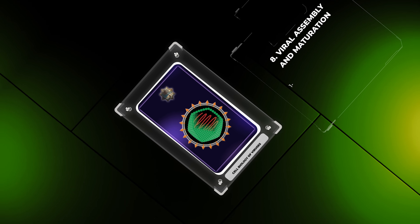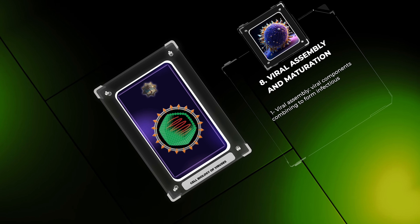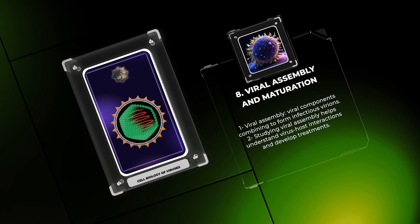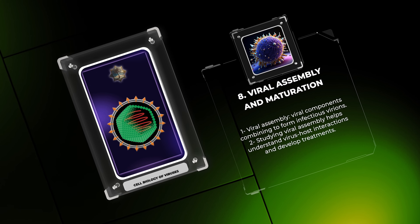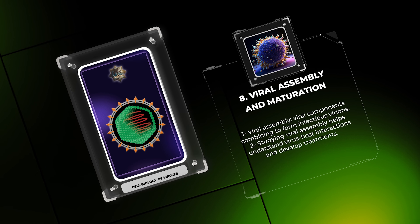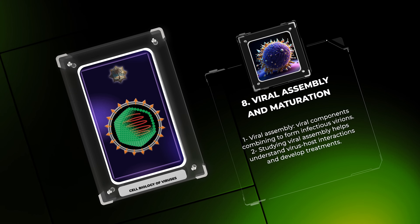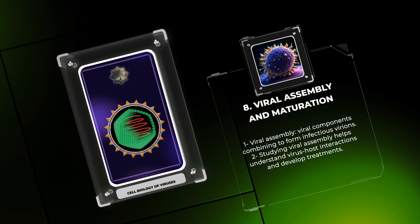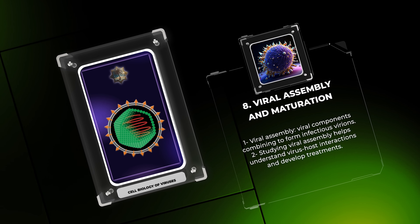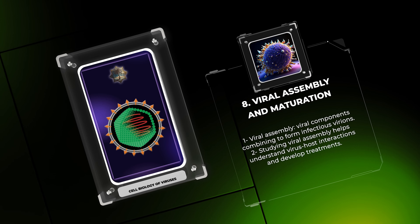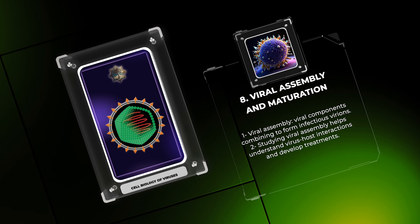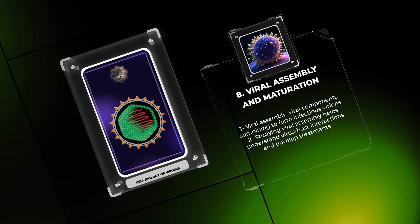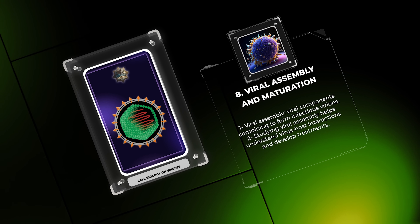In the process of viral assembly, viral components such as proteins and genetic material combine to form infectious variants. This process often takes place in specific cellular compartments or structures. After assembly, the viral particles undergo maturation, including protein processing and gaining infectivity. Studying these mechanisms can help us understand how viruses interact with their hosts and develop treatments.